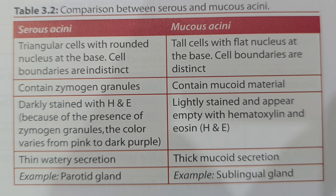The characteristic feature of serous acini is darkly stained with H&E, because of the presence of zymogen granules. The color varies from pink to dark purple. The secretion is thin and watery in serous acini, with triangular cells having a rounded nucleus at the base. Cell boundaries are indistinct.